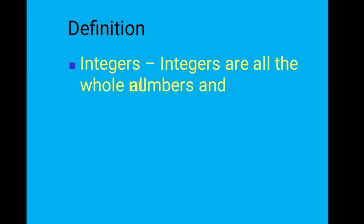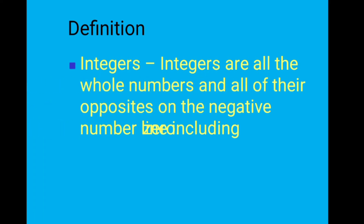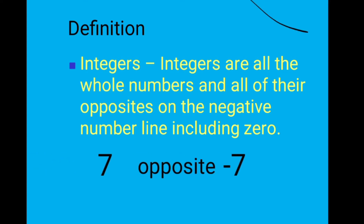Now our main concept: integers. Integers are all whole numbers, zero, and all of their opposites on the negative number line, including zero. So the positive numbers and all their opposite numbers — which are the negative numbers — and then zero: that is all about integers. So 7 and minus 7 are integers.